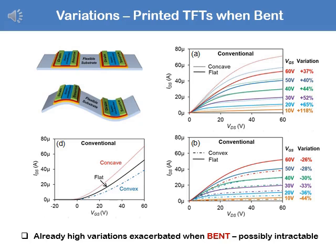Looking at the output characteristics at 60 volts: when the substrate is bent in a concave fashion, the variation is 37% at 60 volts, and it gets worse at lower voltage. When bent in the convex fashion, the variation goes in the opposite direction at minus 26%. So the net variation at 1 cm radius is 37 plus 26, which accounts to 63% — and that's a lot. This is in addition to the variations from printing.